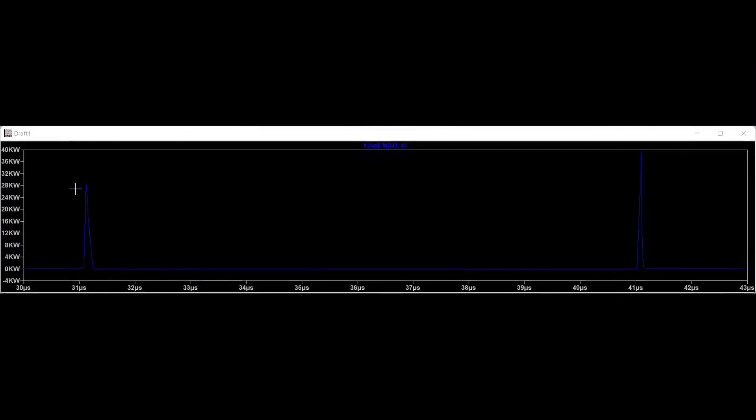The two peak spikes are illustrated to represent the turn-on and turn-off transition. The smaller peak represents the turn-off transition and the energy dissipated in the MOSFET at that instant.